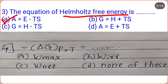Next question: −ΔG at pressure P and temperature T is equal to what? And also, −ΔG = H − TS. The correct option is C — W_net, that is the net work done.